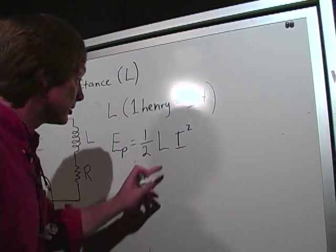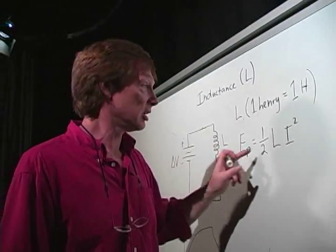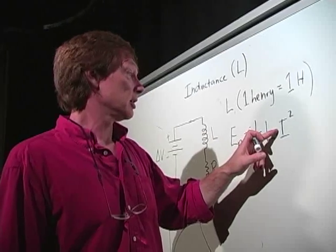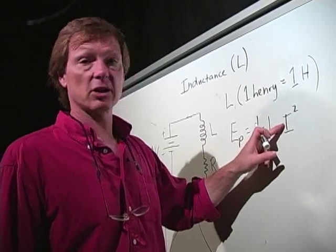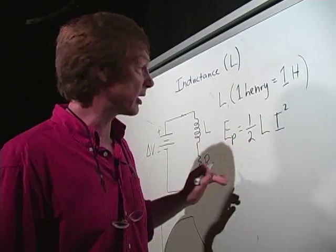Also, keep in mind, if I double the current, it's squared, so I'll get four times the energy. If I cut the current by 1/3, that would be 1/2 of the potential energy, because it's squared.